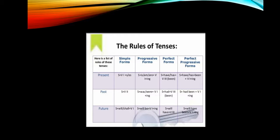For progressive or continuous forms: present progressive uses subject plus am/is/are plus verb with -ing form. Past continuous uses subject plus was/were plus verb with -ing form.